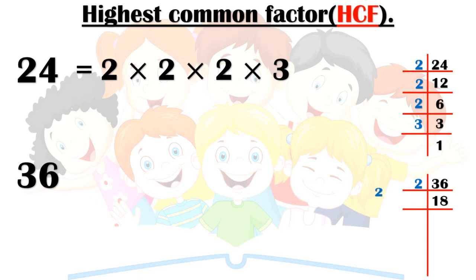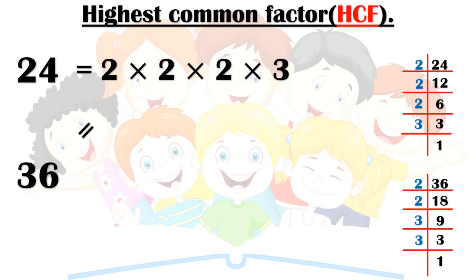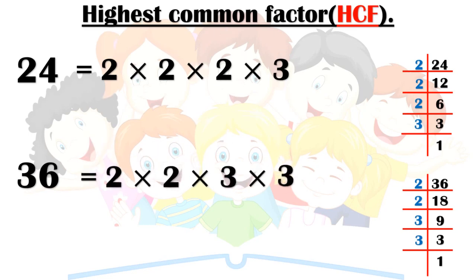Then 3 threes are 9, and finally 3 ones are 3. Now I will write this. You can see: 2 × 2 × 2 × 3 × 3. Now if I write this, I will just check what is common. Okay, here is something common. What is common? Two. I have highlighted it in green.